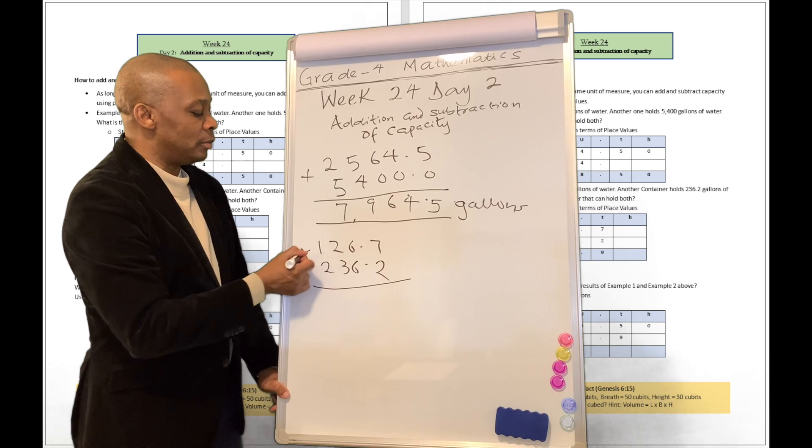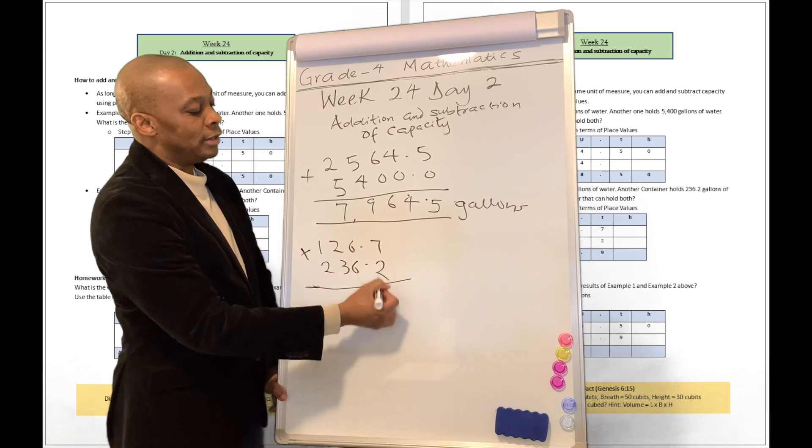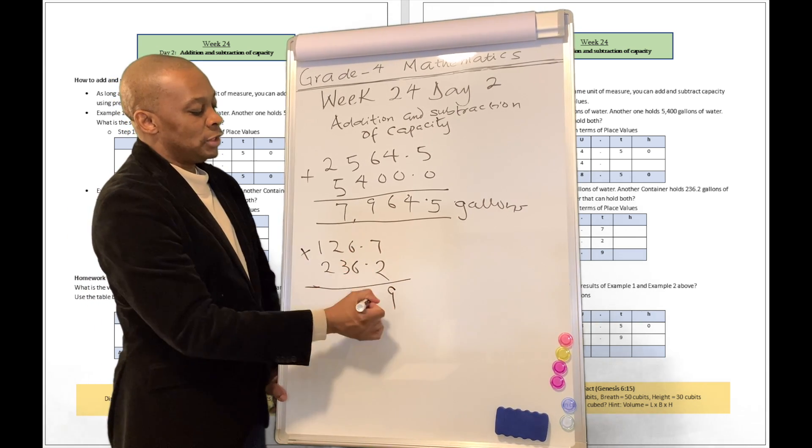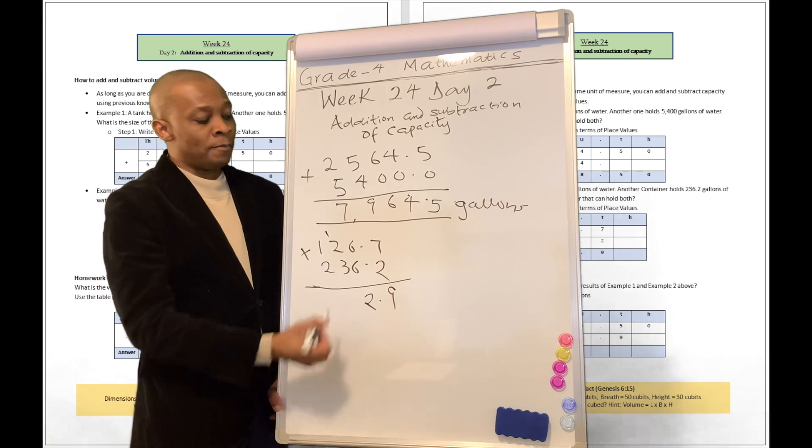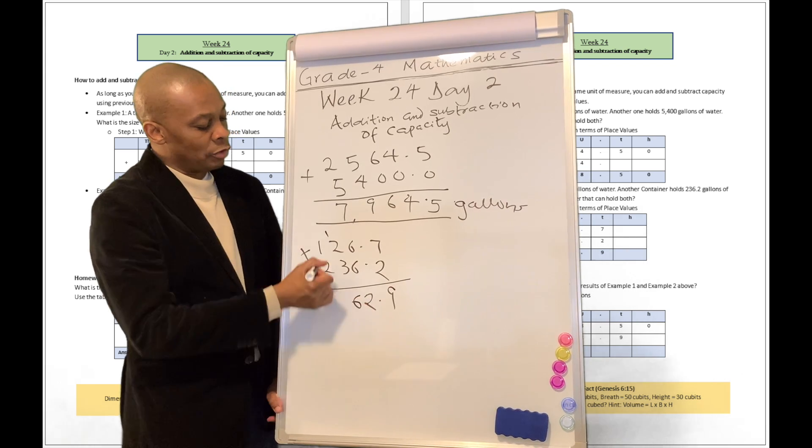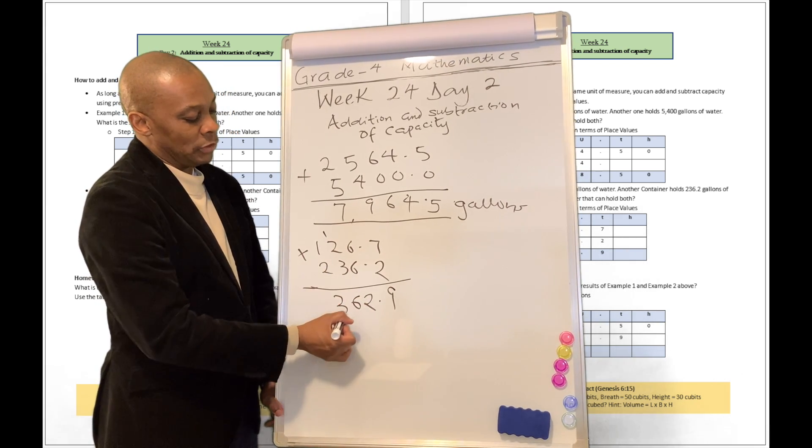A container holds 126.7 gallons of water. Another container holds 236.2 gallons of water. What is the size of the container that can hold both? That's another addition problem. Go ahead and add it together. 7 plus 2 is 9. 6 plus 6 is 12. Carry your 1 over here. 1 plus 2 is 3. 3 plus 3 is going to be 6 for you. 1 plus 2, that is 3.